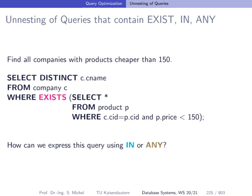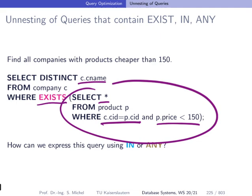Let's look at more complicated queries. We want to find company names that have products cheaper than 150. We write this as: SELECT DISTINCT company name FROM company WHERE EXISTS (subquery selecting products from that company with price less than 150). The EXISTS means: whenever this subquery returns any result, the company qualifies. This exists-based query can also be written using IN or ANY, but that doesn't resolve the unnesting challenge.